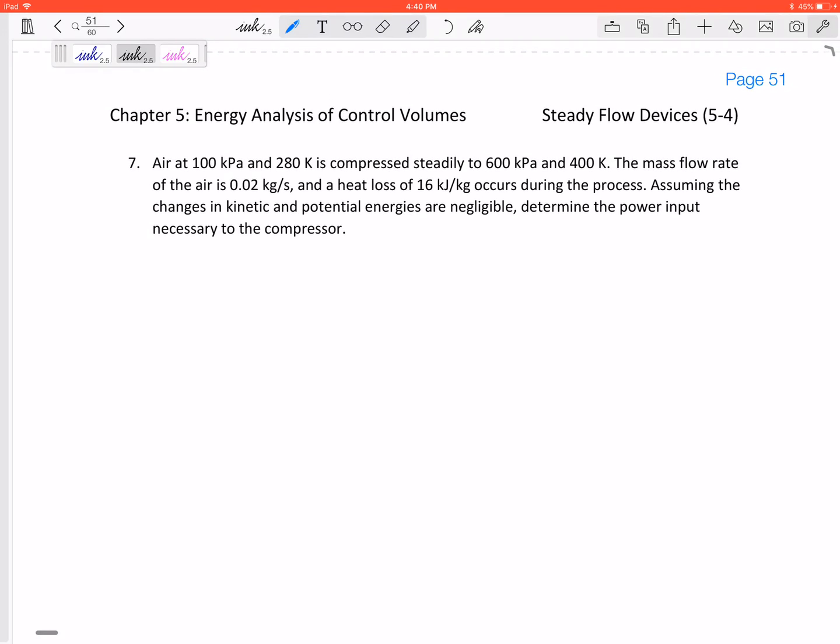Alright, let's look at problem number seven in our notes. It's a steady flow device, a compressor. Air at 100 kPa and 280 Kelvin is compressed steadily to 600 kPa and 400 Kelvin. The mass flow rate is 0.02 kilograms per second with a heat loss of 16 kilojoules per kilogram. Assuming the change in kinetic and potential energies are negligible, determine the power input necessary to the compressor.